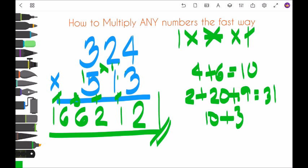So the answer is one hundred sixty-six thousand two hundred and twelve. Easy. Now let's do another example.